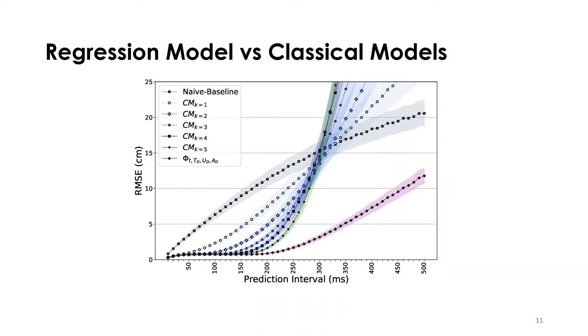So, our next step was to use 15% of the data as training data and we applied regression to build personalized models. The personalized regression models outperform the classical models.